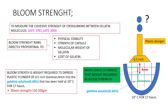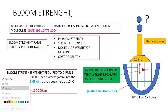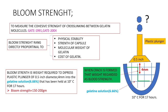The topic is properties of gelatin. The first property is bloom strength. Bloom strength is used to measure the cohesive strength of cross-linking between the gelatin molecules.